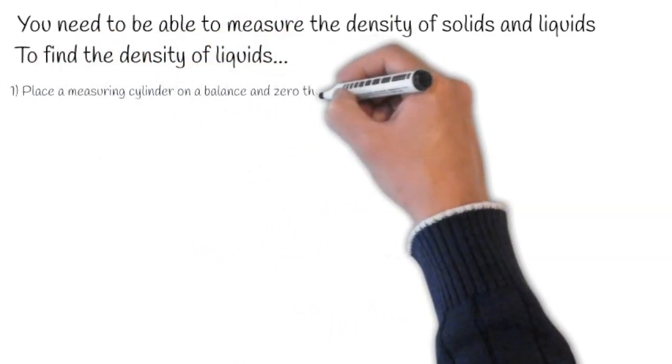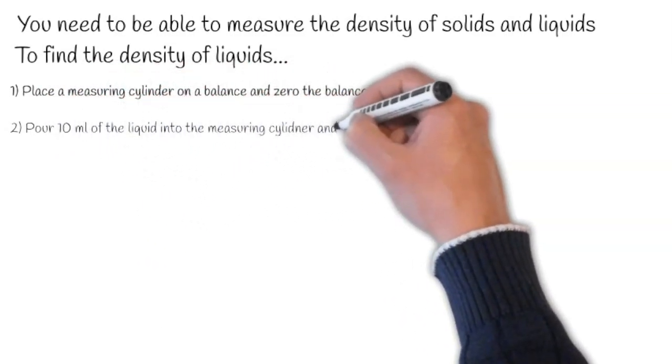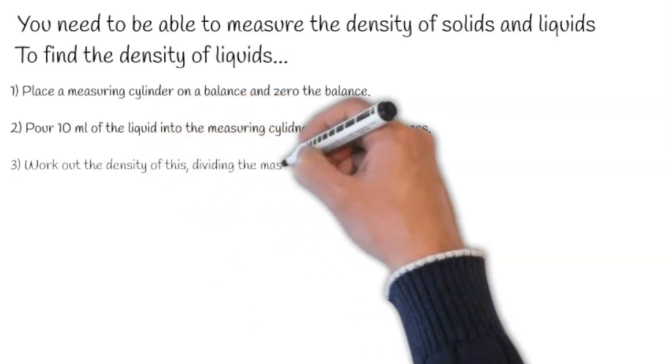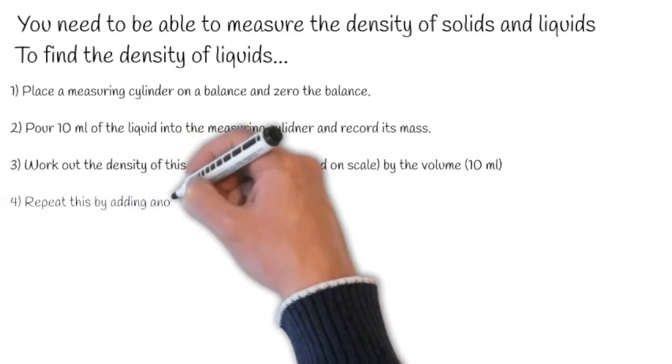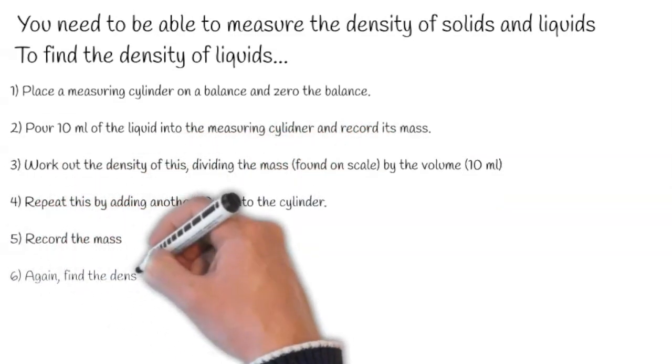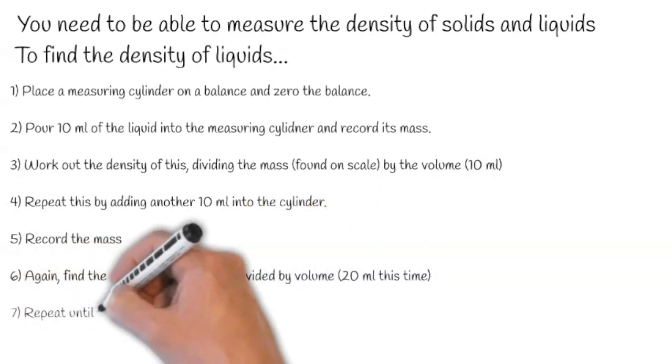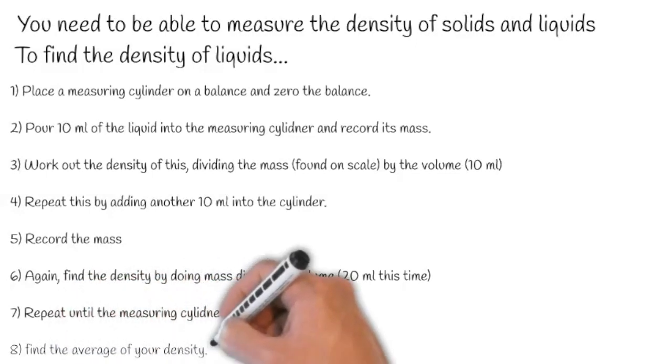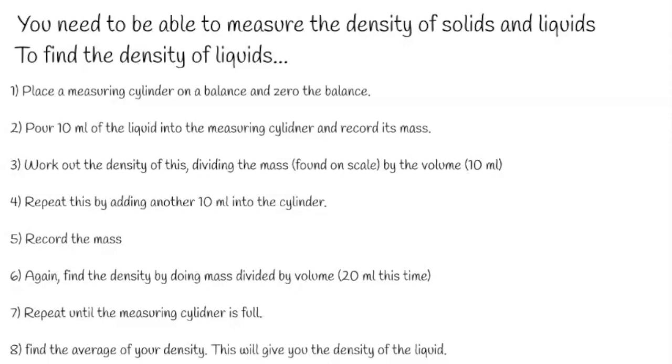Step one: place a measuring cylinder on a balance and zero it. Then pour 10 milliliters of the liquid into the measuring cylinder and record its mass. Work out the density by dividing the mass by the volume. Repeat this by adding another 10 milliliters, recording the mass again, and finding the density. Repeat until the measuring cylinder is full, then find the average of your densities. This will give you the density of the liquid.